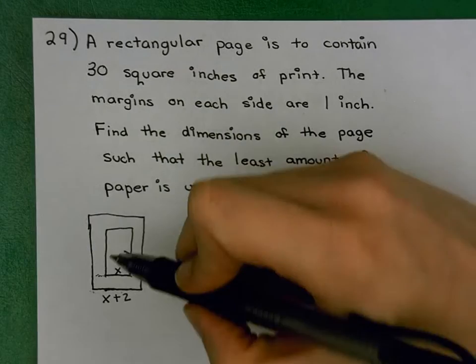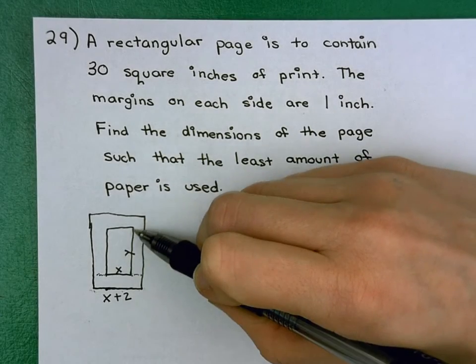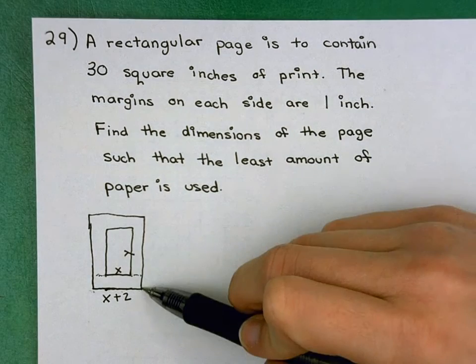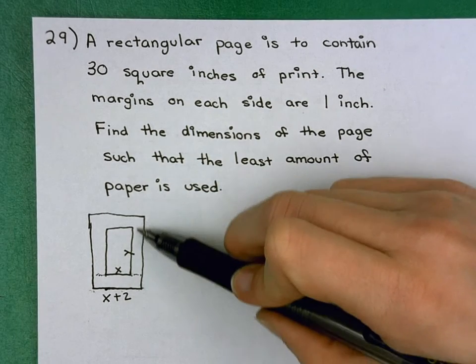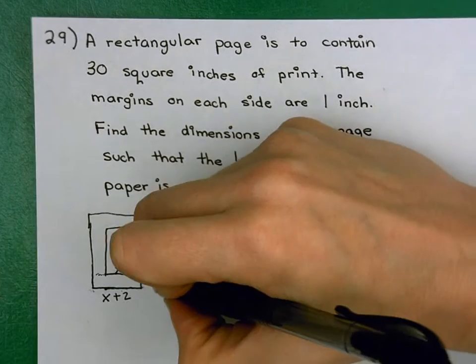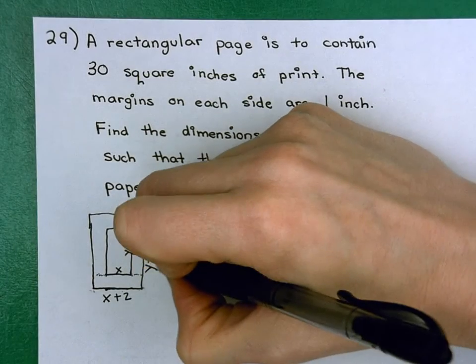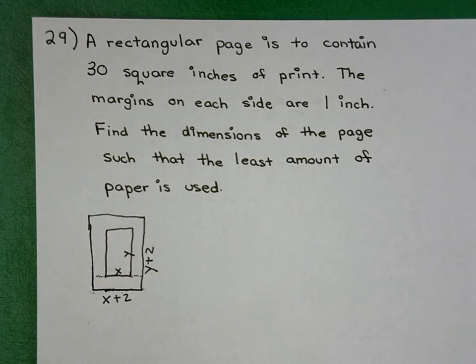Okay, for the Y, we have Y, which is this from here to here, this length from here to here. Which means that my long length, my outside length, would be that Y plus 1 for my margin plus another for my margin. So this would be Y plus 2. Okay, so there's my picture.